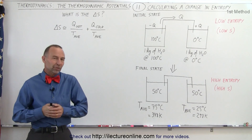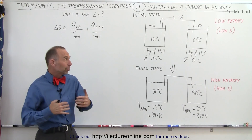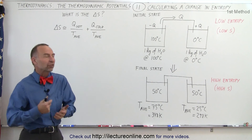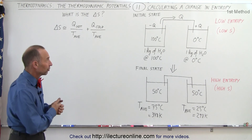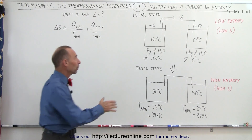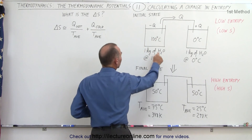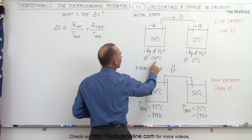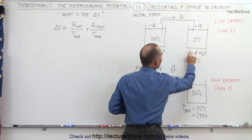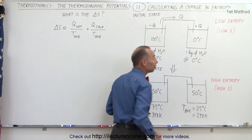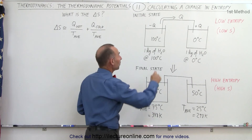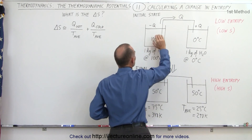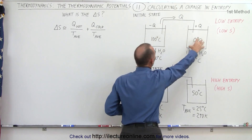Welcome to Electronline. We're going to do a simple example to illustrate how the change in entropy occurs. We have a container with one kilogram of water at 100 degrees centigrade and another container with one kilogram of water at zero degrees centigrade. We now provide a conducting path which allows heat to travel from where it's hot to where it's cold.